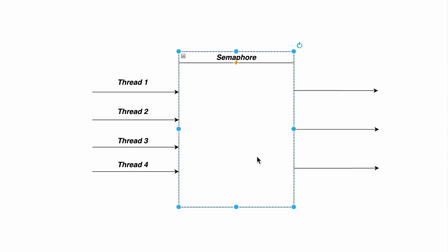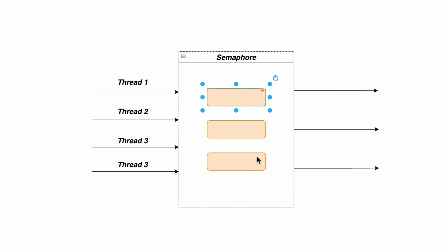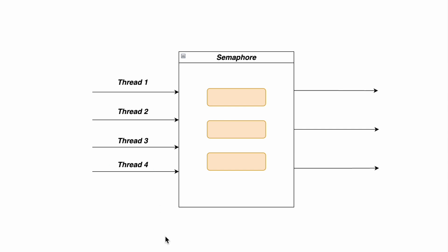After thread one releases its permit, all three permits are available again with the semaphore. At some point thread four gets a chance to execute by acquiring a permit. This is the way in which the semaphore works.